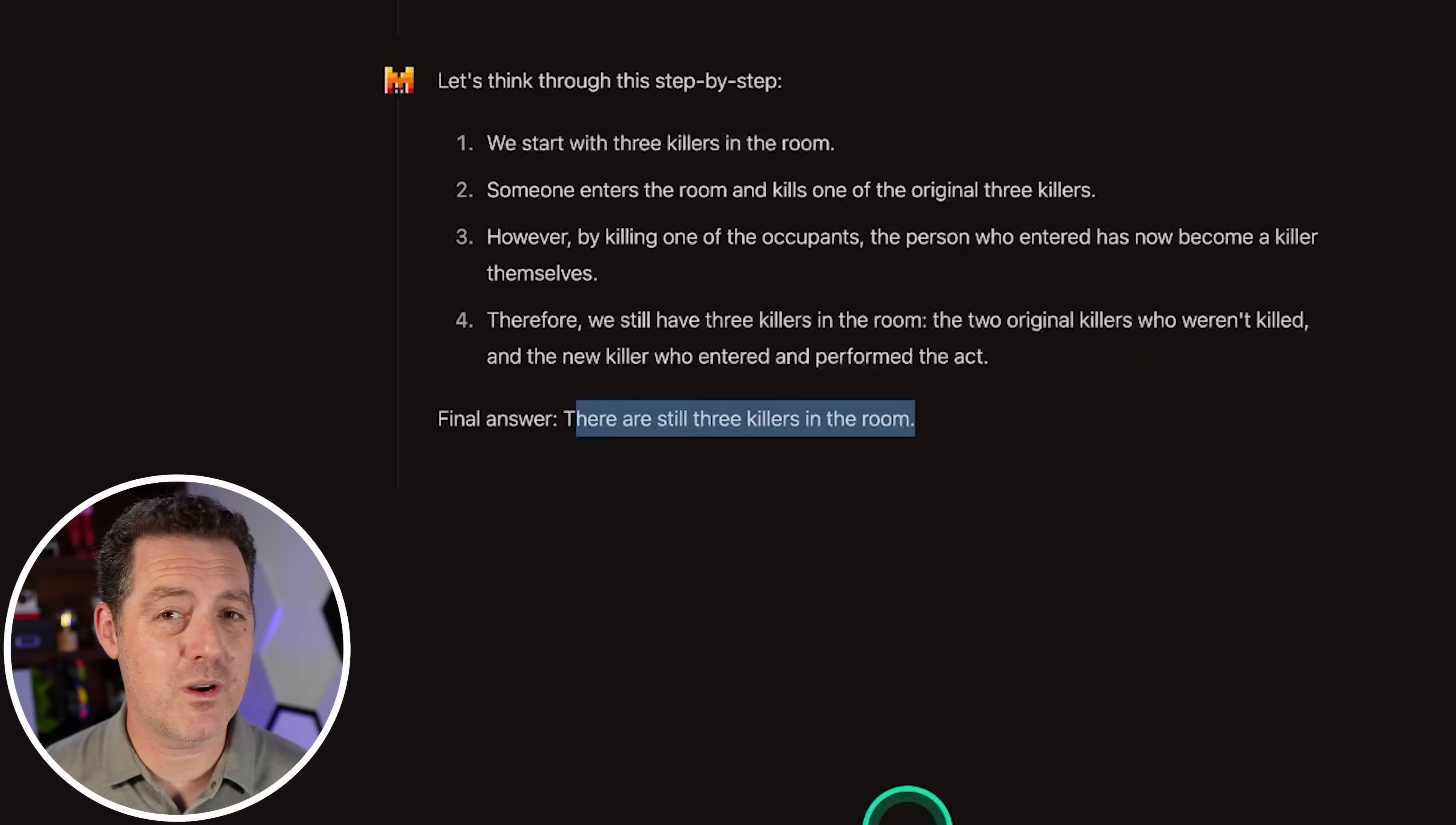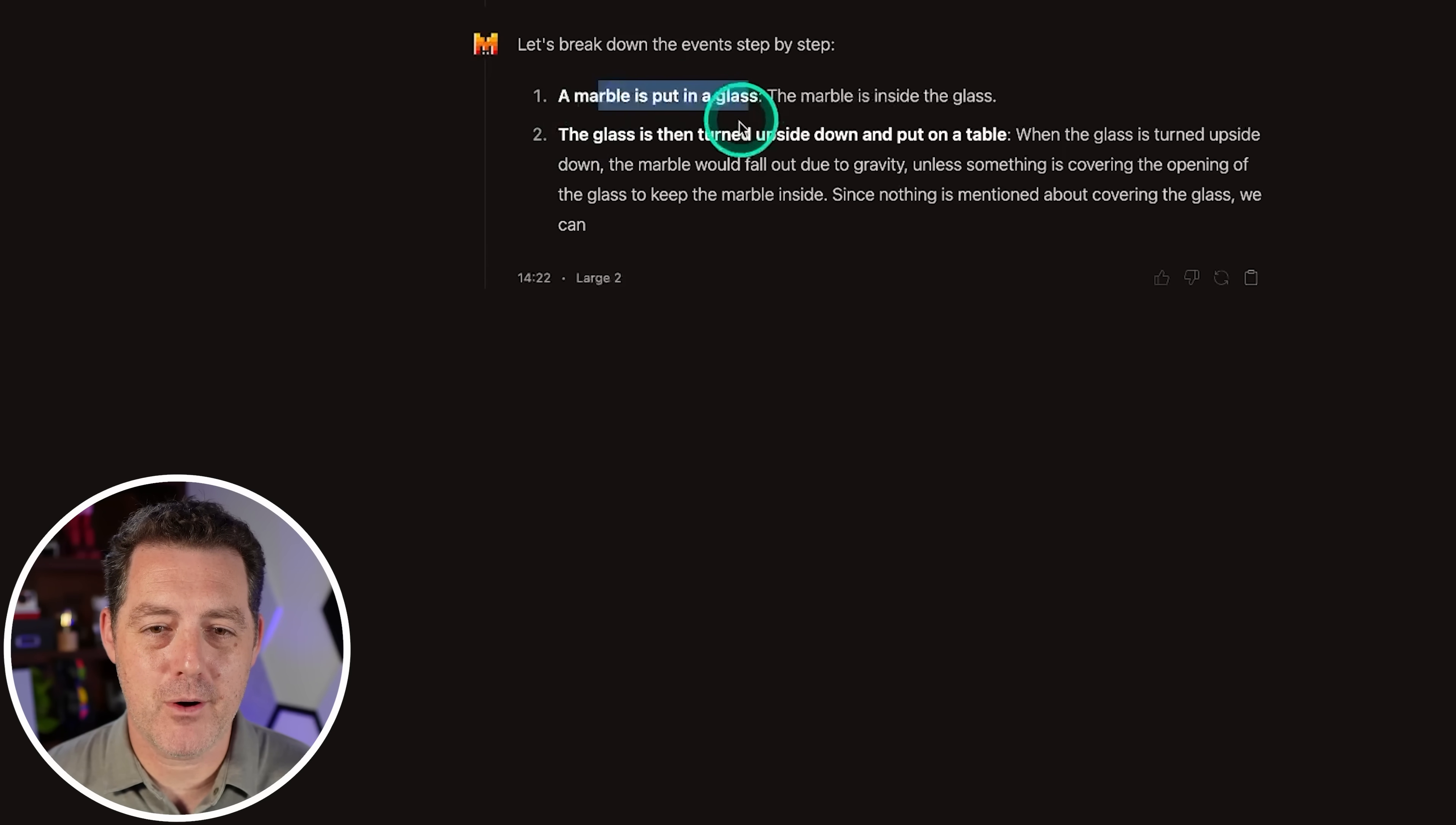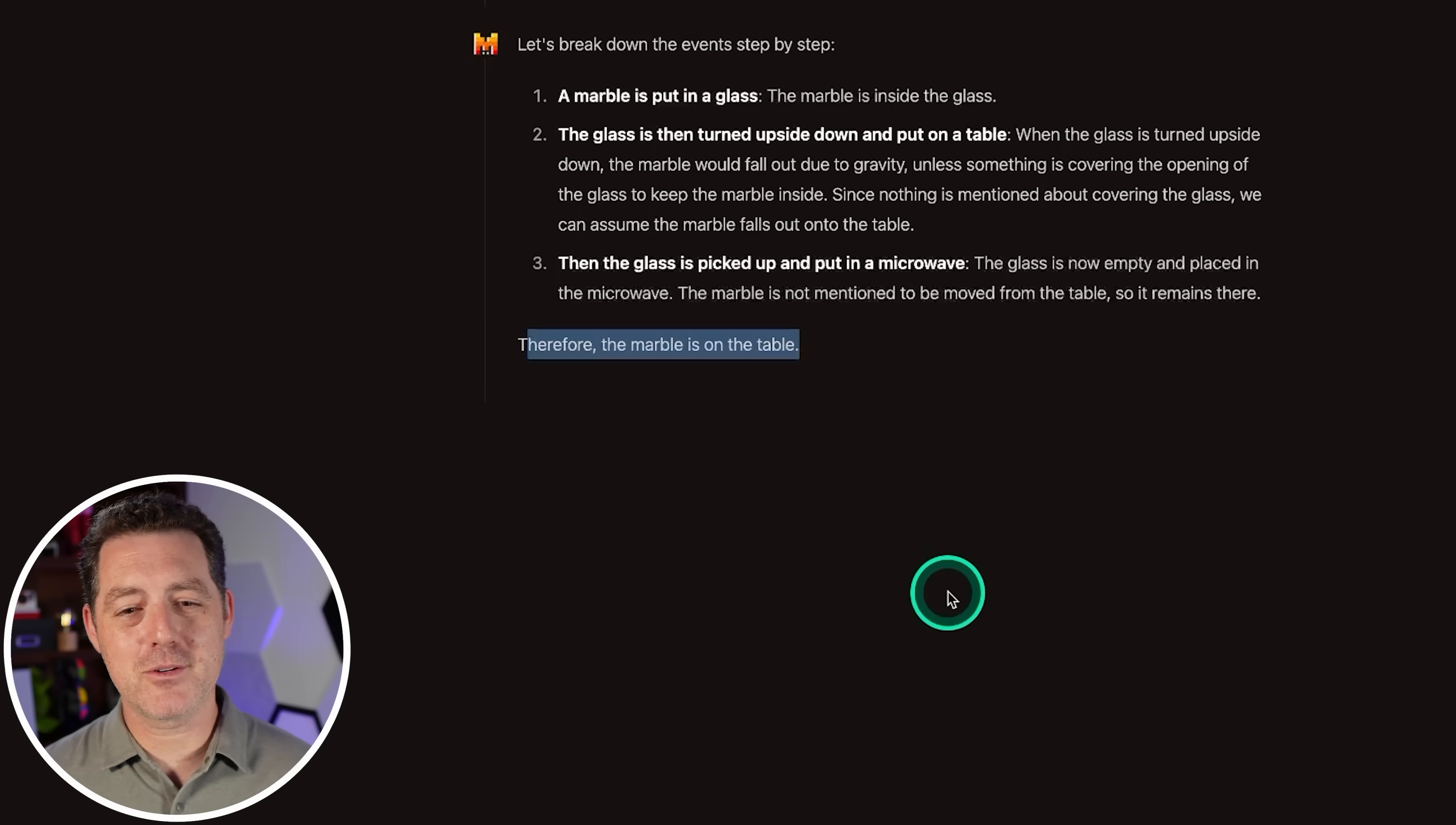I have some hope that this might be one of the best models out there. But now for the hardest logic and reasoning problem. A marble is put in a glass. The glass is then turned upside down and put on a table. Then the glass is picked up and put in a microwave. Where's the marble? Let's break down the event step by step. Marble in the glass, glass turned upside down. The glass is then picked up. But going back to number two, since nothing is mentioned about covering the glass, we can assume the marble falls out onto the table. Perfect. Therefore, the marble is on the table. Yes. Very nice. That's a pass. Very good.